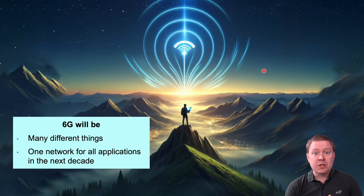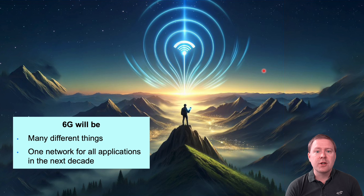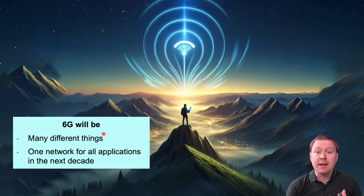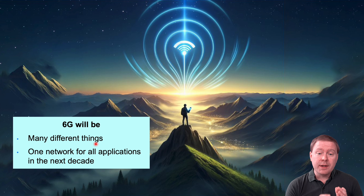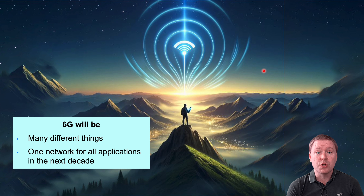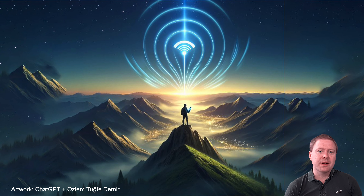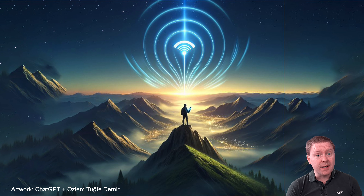To wrap up, 6G will be the next generation cellular technology, deployed in 2030 and used throughout the next decade. It will be a network deployed in many different frequency bands, used for many different things, with many different characteristics in different scenarios. There are a large number of performance targets that the technology will have to achieve, surpassing 5G — one network for all applications, both those we can imagine today and those that might arise during the next decade. Thank you for watching. If you would like to understand 6G candidate technologies in further detail, there are many other videos like this one on this YouTube channel.